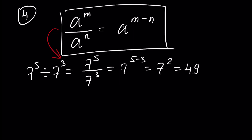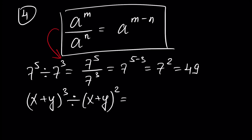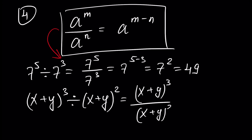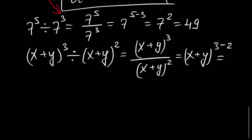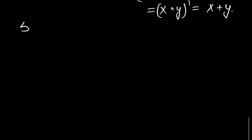Another example: (x plus y) to the power of 3 divided by (x plus y) to the power of 2 equals (x plus y) to the power of 3 minus 2, which is (x plus y) to the power of 1, or simply x plus y. Next is law number 5.